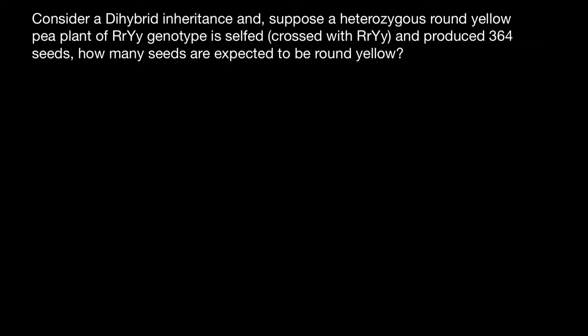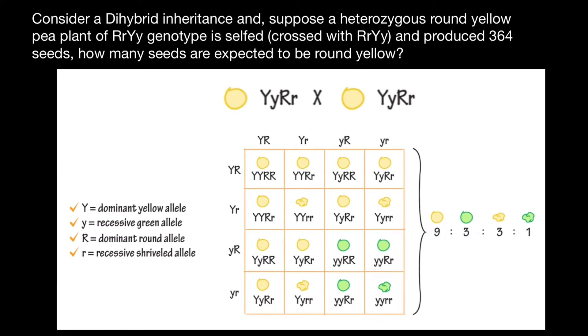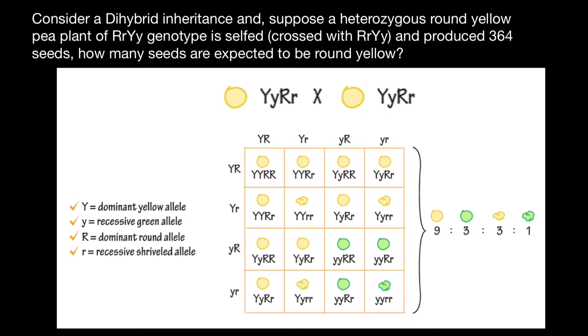How many seeds are expected to be round and yellow? This is a classical example of the Mendelian dihybrid cross. I'm going to use this table which you can find in any textbook on genetics. We have one parent that is dihybrid, meaning heterozygous for each gene, gene Y and gene R. The other parent is also dihybrid or heterozygous for both genes Y and R.